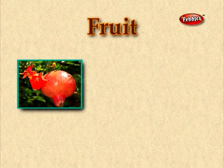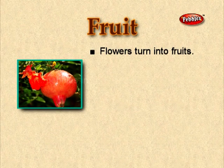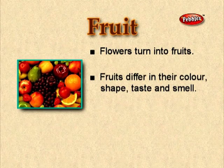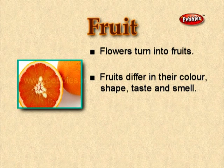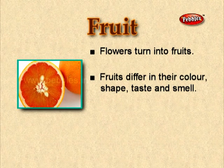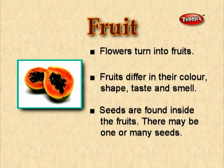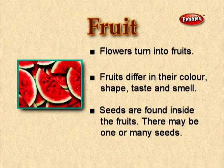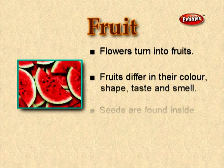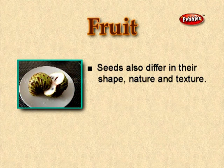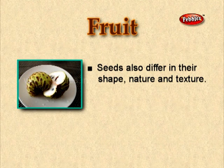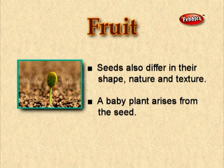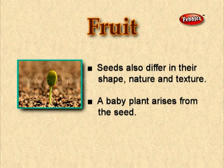The fruit. Flowers turn into fruits. Fruits differ in their colour, shape, taste and smell. Seeds are found inside the fruits. There may be one or many seeds. Seeds also differ in their shape, nature and texture. A baby plant arises from the seed.